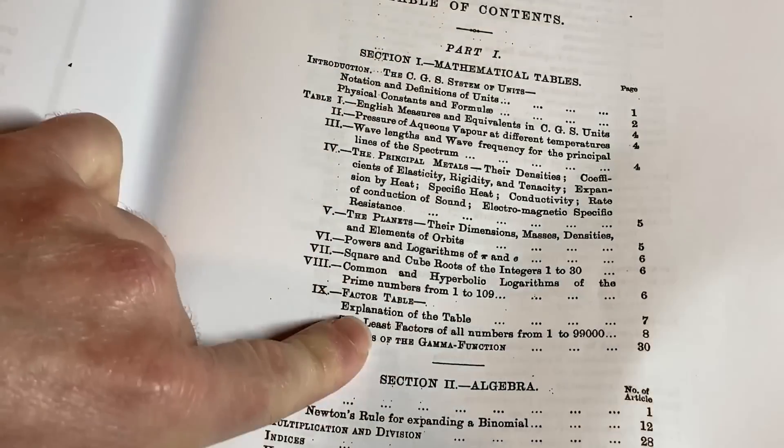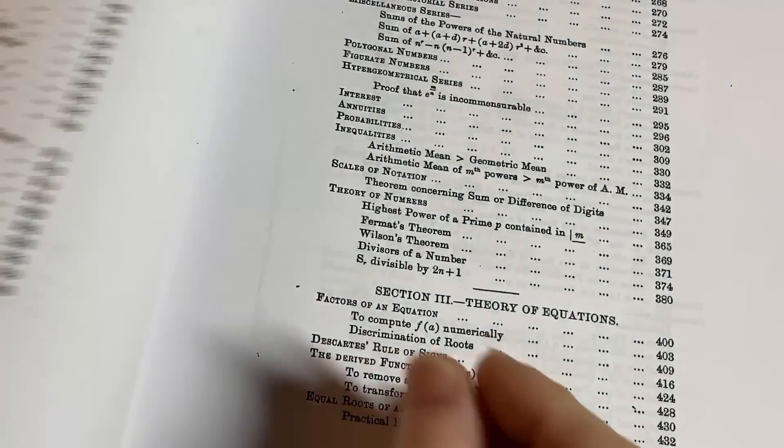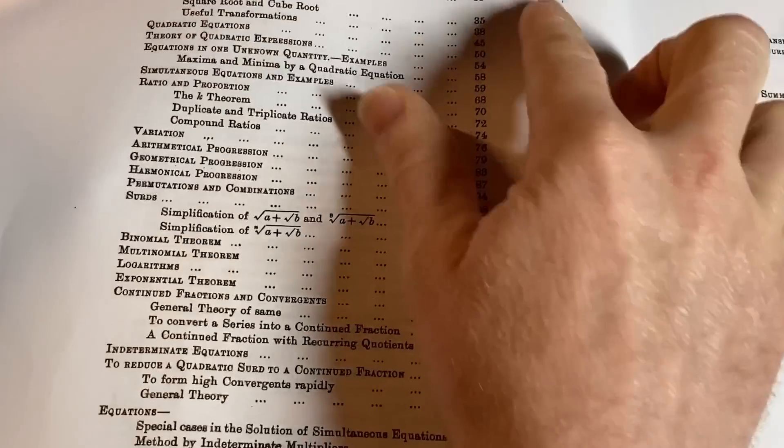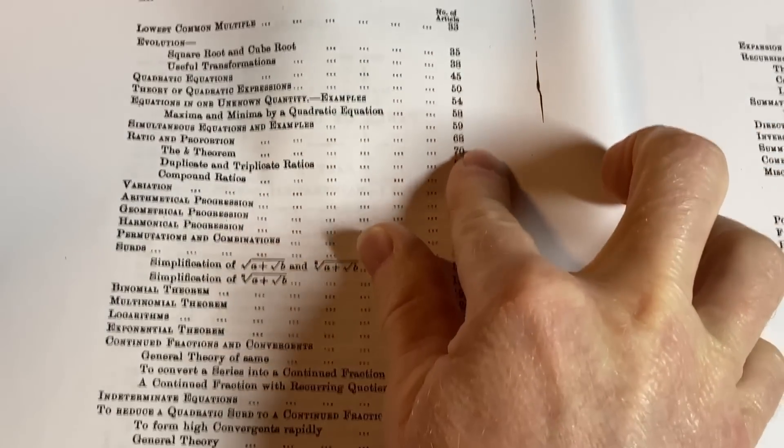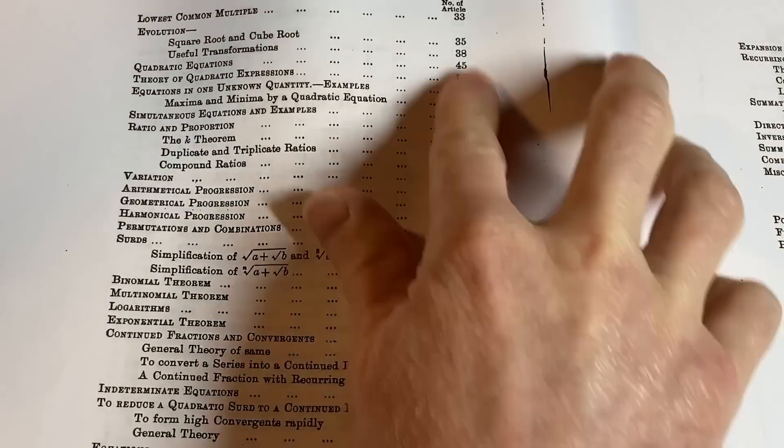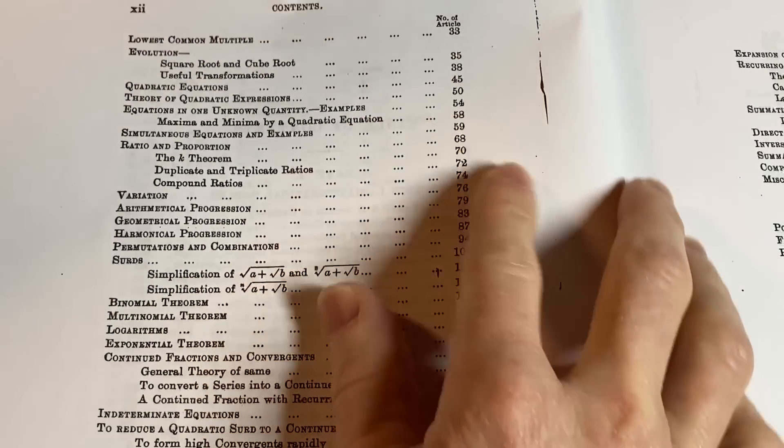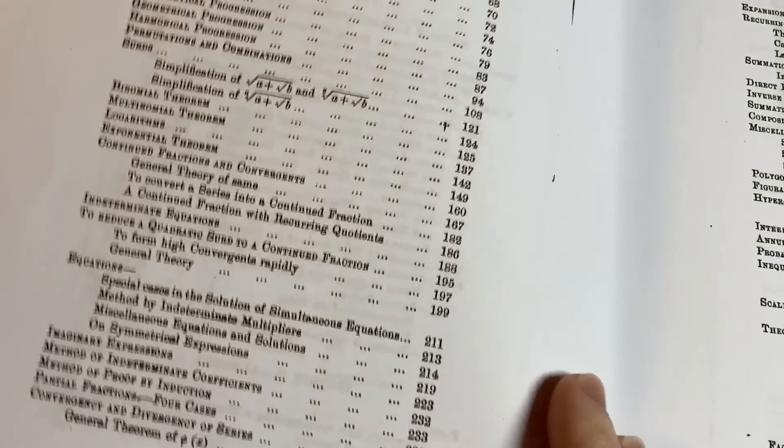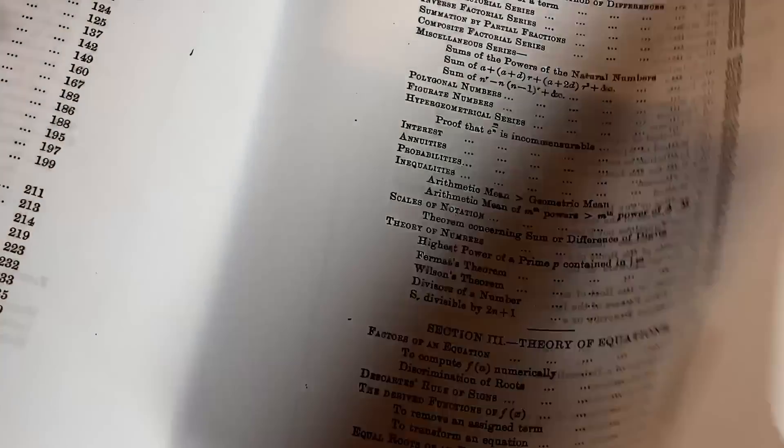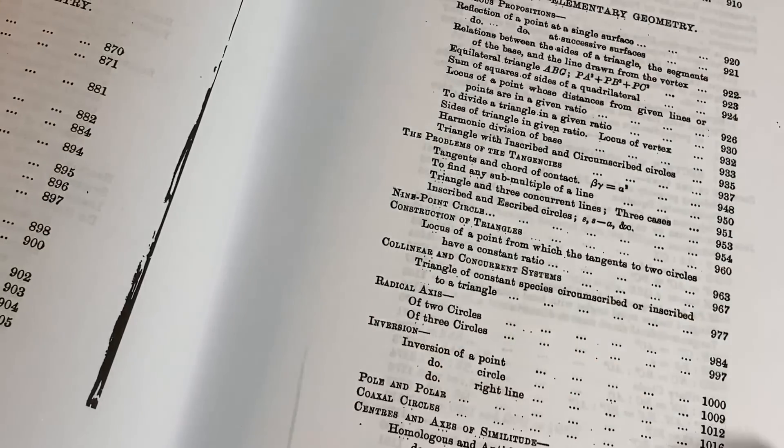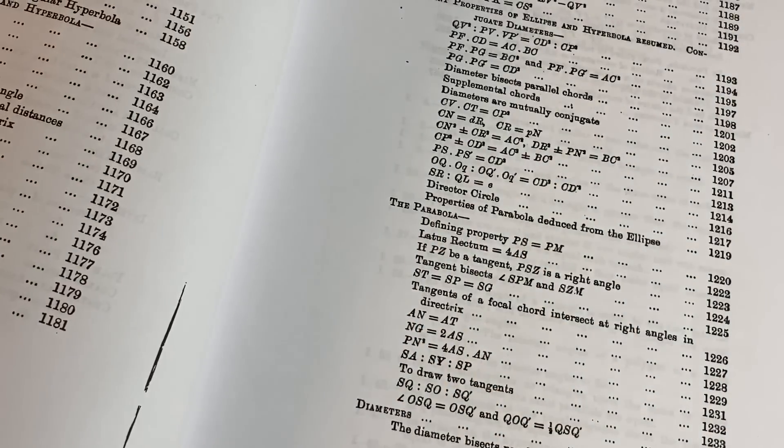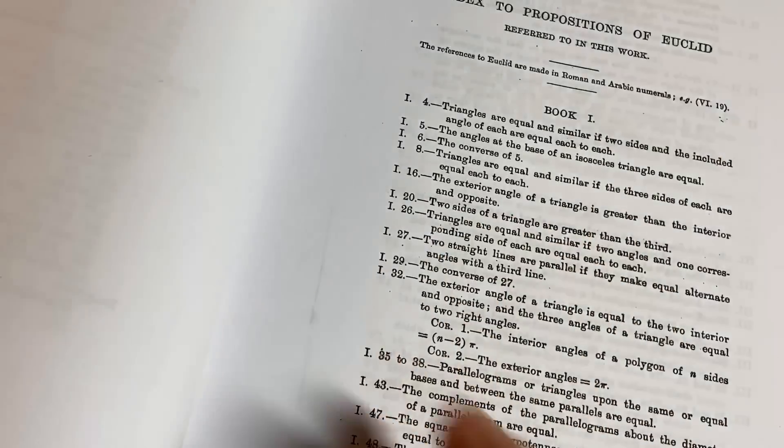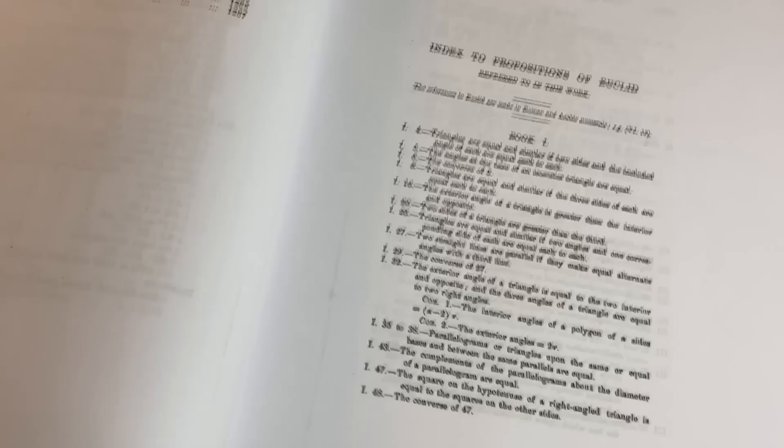Then it has page here, and then section two, algebra, right here. So I thought these were page numbers. These are not page numbers. It's number of article. That's what it says. I don't know if you can see it. Number of articles. So these are results. So it's basically a book filled with results. I mean, look at all of these results. It's just over a thousand results, over 1,238 results, just mathematical results. So 1,267 to be precise. That's how many results we have in this book.